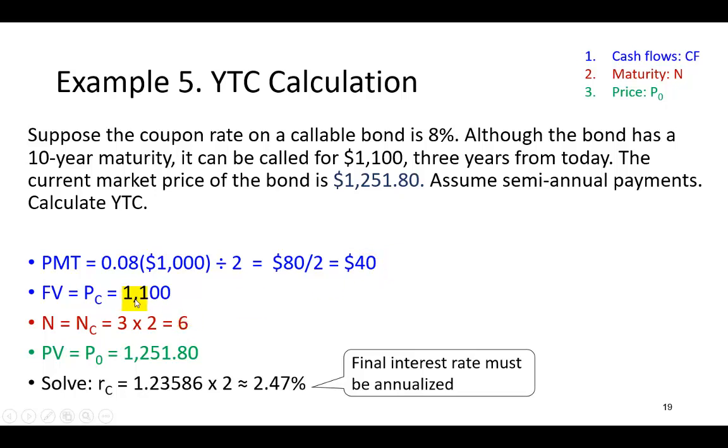you will receive the call price of $1,100, which includes the maturity value of $1,000 plus a premium of $100. So be careful here that that FV here is going to strictly represent the future value of this callable bond,